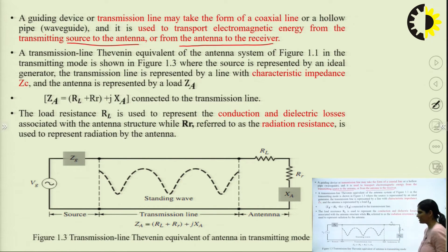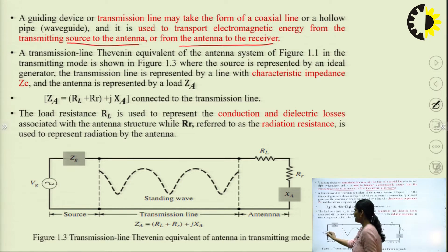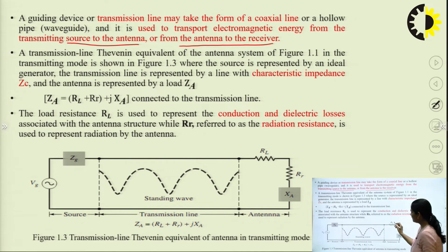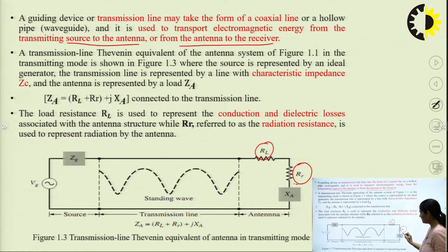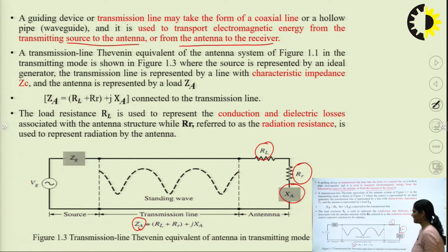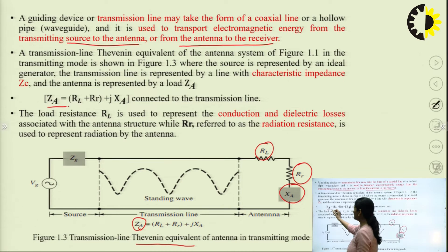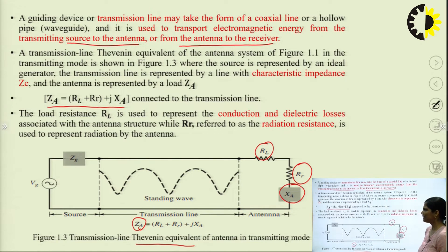You can find the equivalent equation for this antenna setup. The source has an impedance Zg and voltage source Vg. This is the source, this is the transmission line, and this is the antenna. At the antenna side, there is RL (load resistance), RR, and impedance XA. You can apply Thevenin's theorem at the transmitting mode to find ZA, which equals RL plus RR plus jXA.